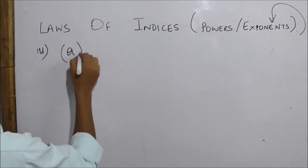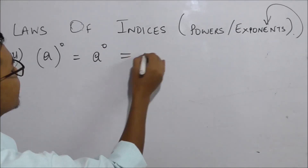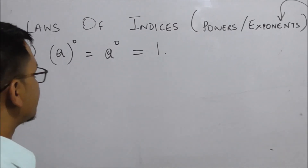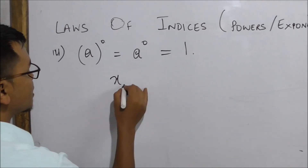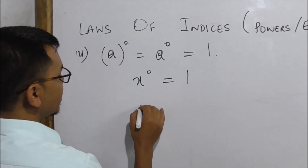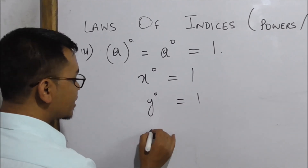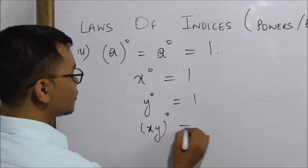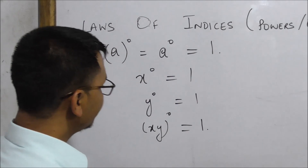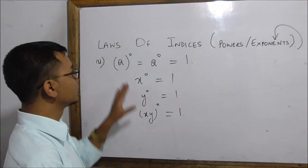A to the power of 0 is equal to 1. Anything to the power of 0 is equal to 1. So x to the power of 0 is equal to 1, and y to the power of 0 is equal to 1.